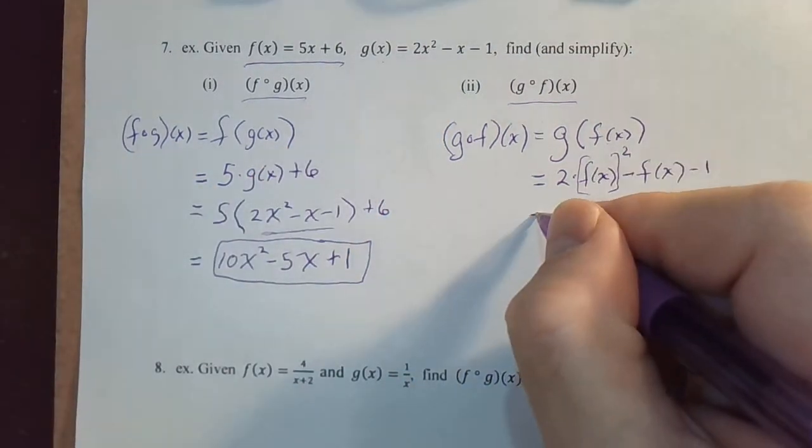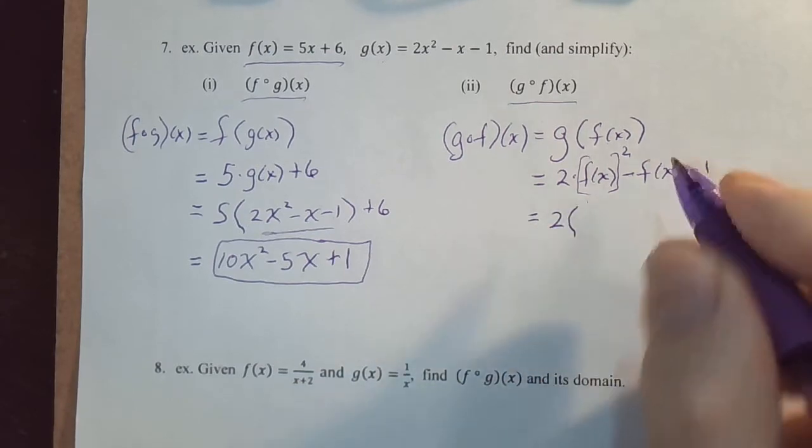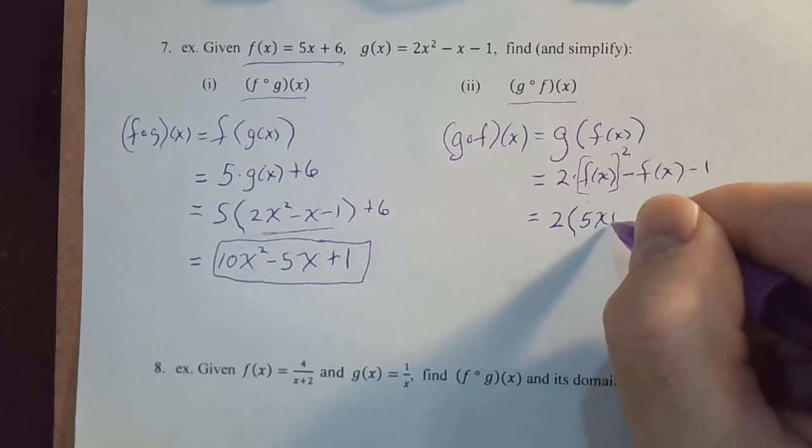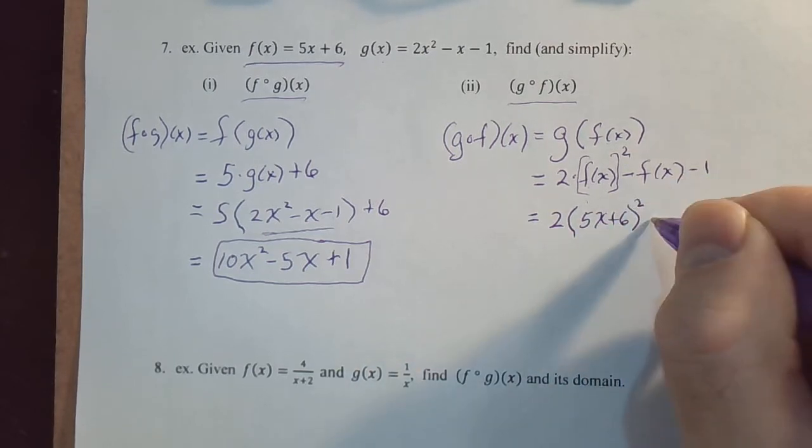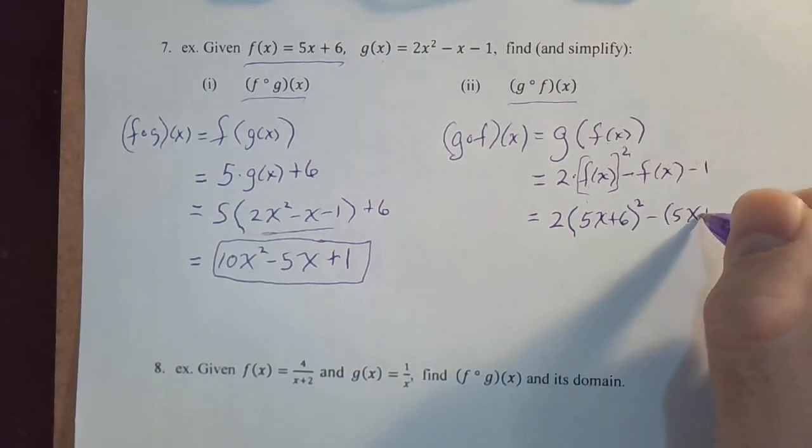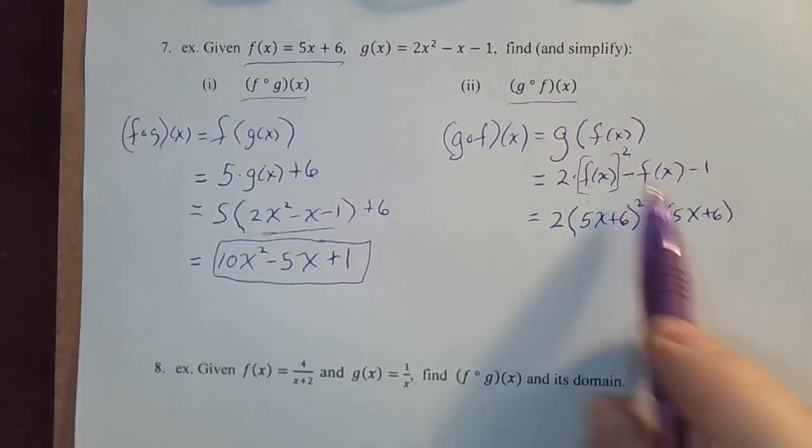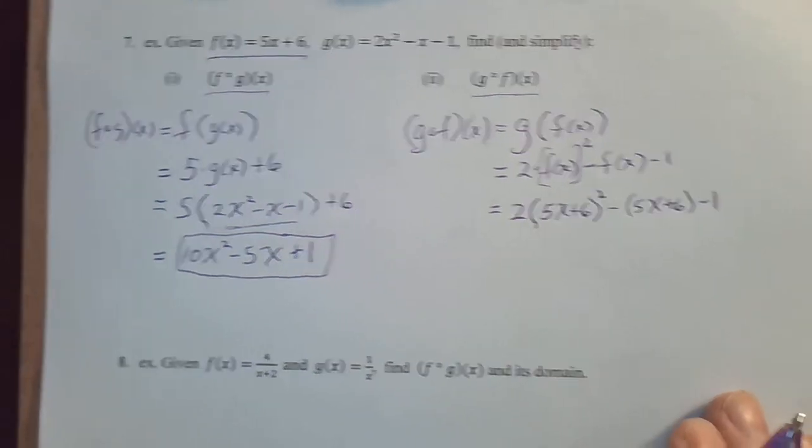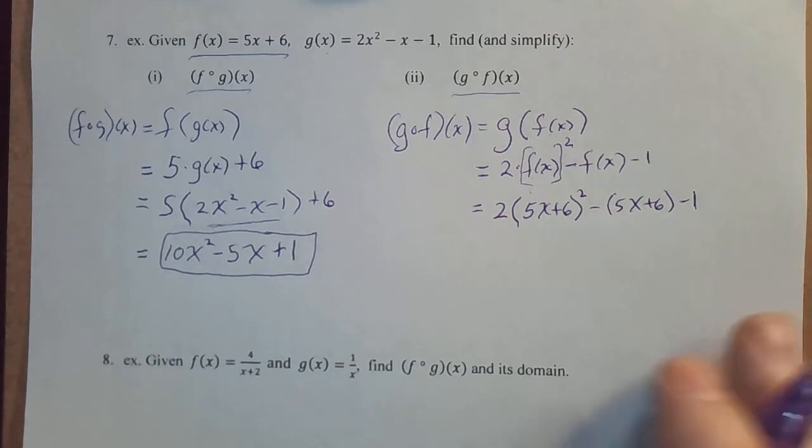So this will give us 2 times, we're just going to substitute here, f of x is 5x plus 6 in parentheses squared minus 5x plus 6 in parentheses. It has to be there because we have a minus sign in front of f of x, minus 1. So we'll just do some arithmetic and simplify and we'll be done with this problem.